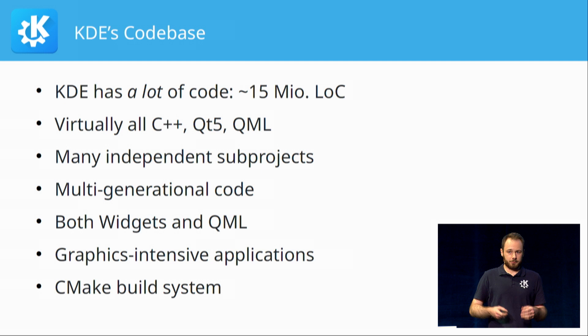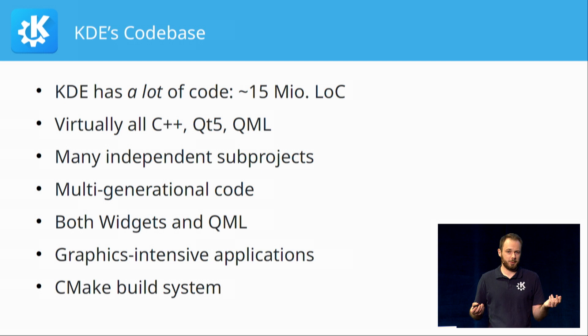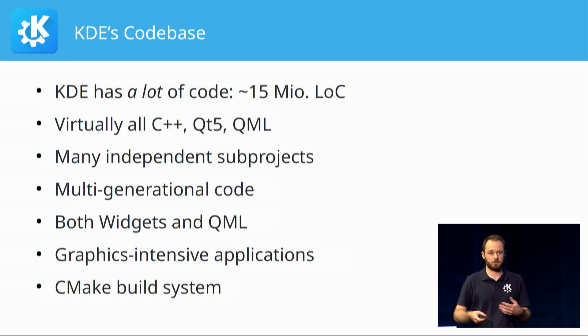Traditionally in KDE everything was based on Qt Widgets because there wasn't much of an alternative. But ever since QML has been a thing, we've used QML in KDE. In particular, Plasma heavily makes use of QML. More and more applications are also either ported to QML or newly created based on QML, and I'll talk a bit about what this means for the Qt 6 port later.